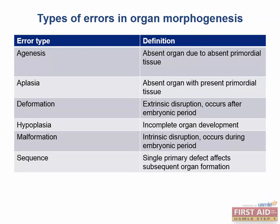A sequence error in organ formation occurs when there is a single primary defect that affects other organs, resulting in multiple abnormalities. An example is Potter syndrome, where renal agenesis leads to decreased fetal urine excretion, which causes oligohydramnios — decreased amniotic fluid. This crowding within the amniotic sac leads to clubbed feet, and pulmonary hypoplasia results because the fetus relies on swallowing amniotic fluid for proper lung development.